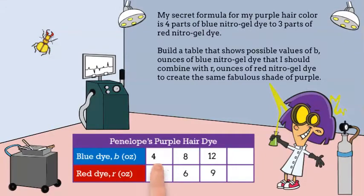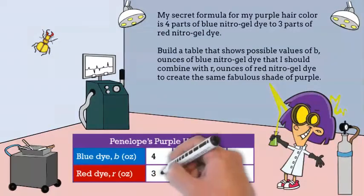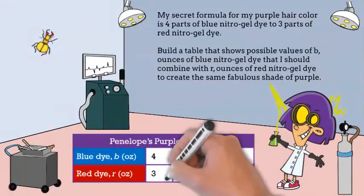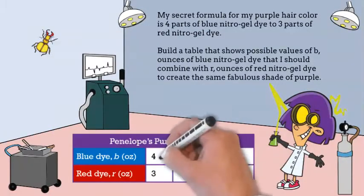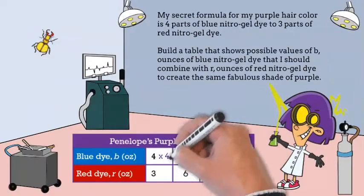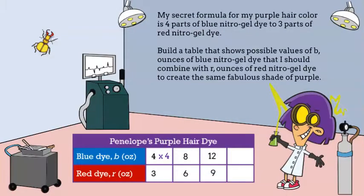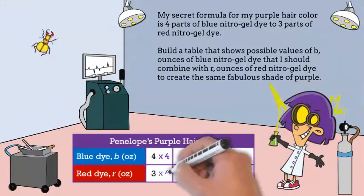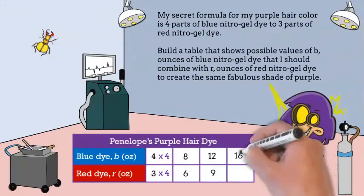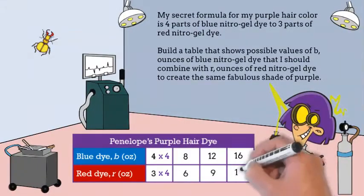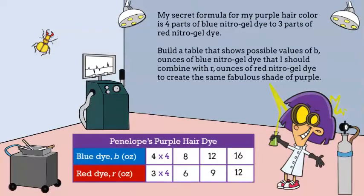Let's go one more time. Multiply the numerator and denominator by — that's right — four. Tell me what you get. Yes, 16 over 12.